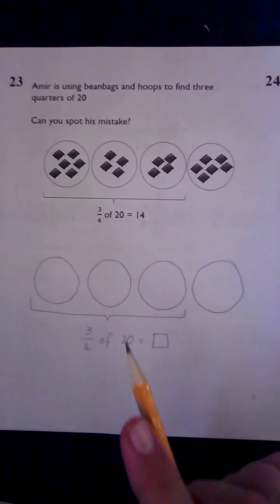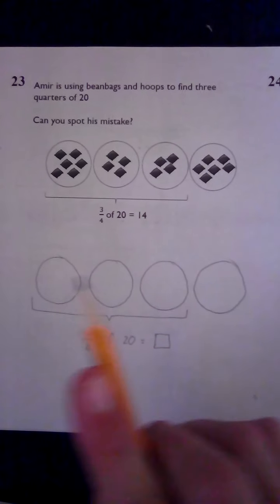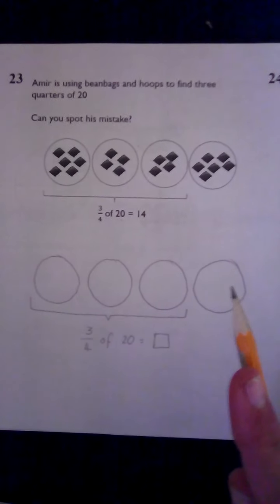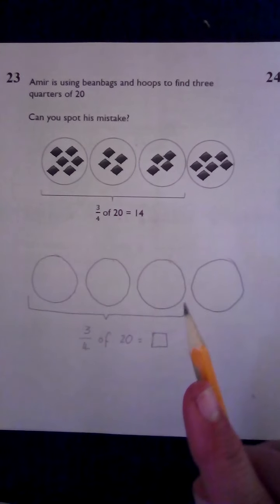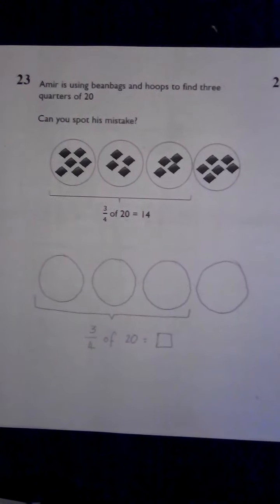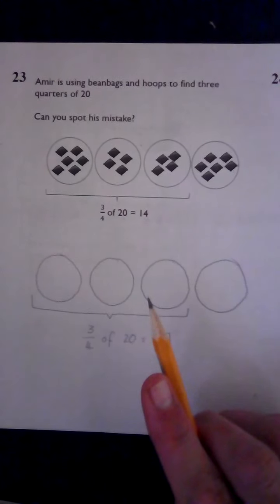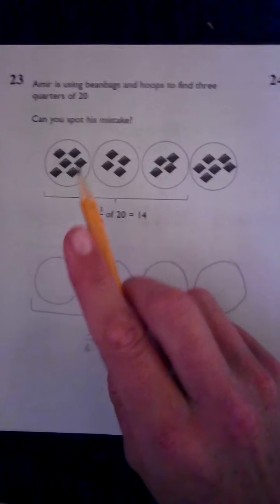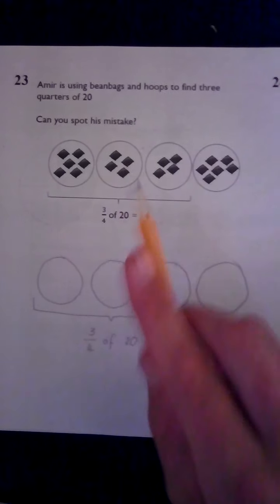So what you're gonna do for me is share his bean bags, his 20 bean bags, equally into these four hoops because we're doing quarters - four hoops - and then count how many you get in three hoops. But you're gonna share them equally because Amir hasn't shared them equally. This one has six, this one has four. You can pause the video now and complete number 23 and then carry on.